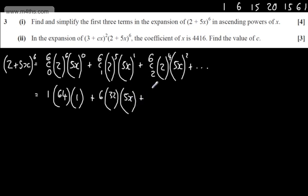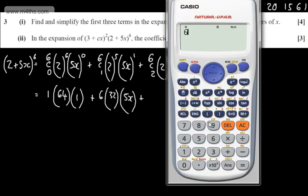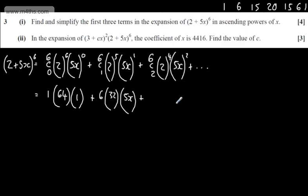Plus 6C2, which we know to be 15. Or of course, we could just type it in. We could press 6, shift, then the divide, and 2. That would give us 15. We can put in here now 15, lots of 2^4, which is going to give me 16, multiplied by 25x².